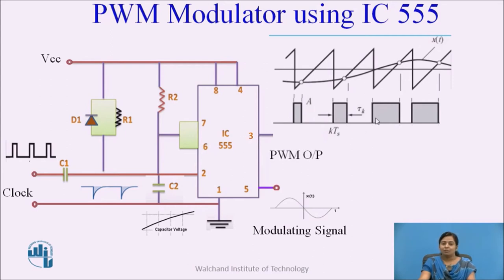This process is continuous and we get variable width pulses — a train of pulses — at the output of this IC at pin number 3. These pulses are the pulse width modulated output.